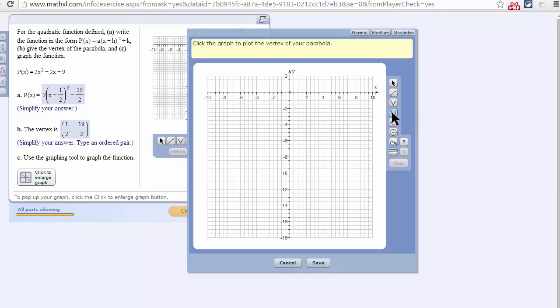Now, the first point I have to use is the vertex. That's going to be located at positive 1 half, negative 19 over 2, which, as you might recall, is negative 9 and a half. Well, here's negative 9. Here's negative 9 and a half.